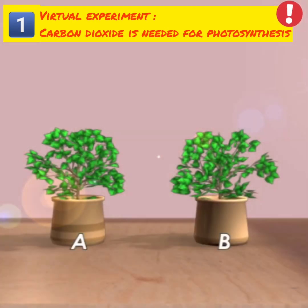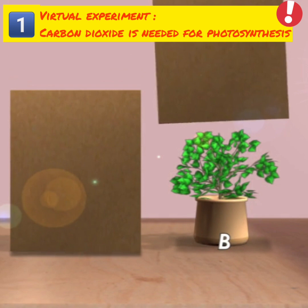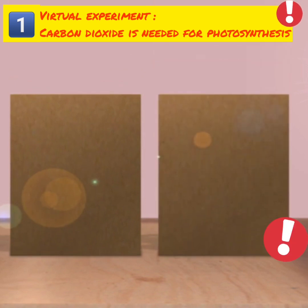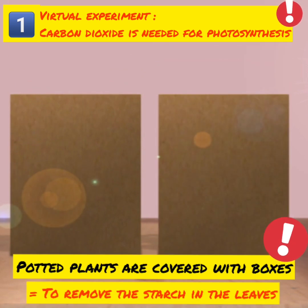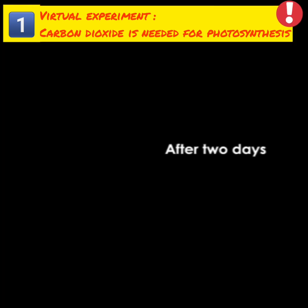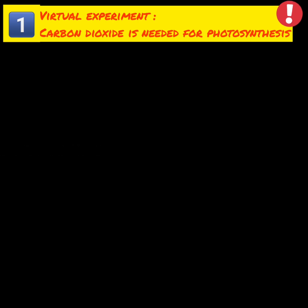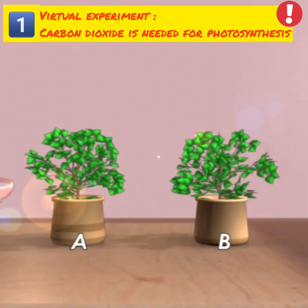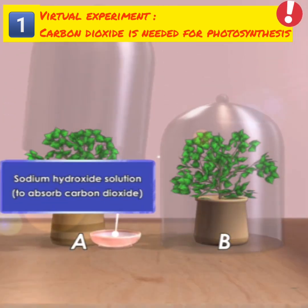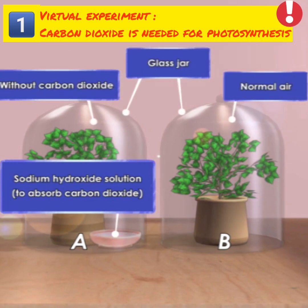Prepare the apparatus as shown here. Cover potted plant A and potted plant B with a box for two days to remove the starch in the leaves. Then, cover the two potted plants with glass jars for two hours.